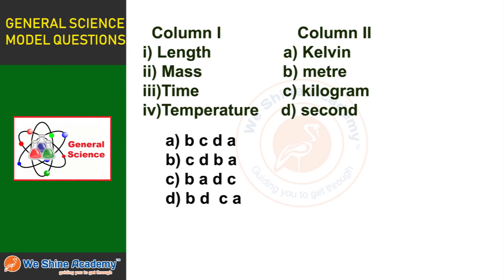The next question is: Match the following. Column 1 — 1: Length, 2: Mass, 3: Time, 4: Temperature. Column 2 — A: Kelvin, B: Meter, C: Kilogram, D: Second. The answer is: 1-B (Length — Meter), 2-C (Mass — Kilogram), 3-D (Time — Second), 4-A (Temperature — Kelvin).